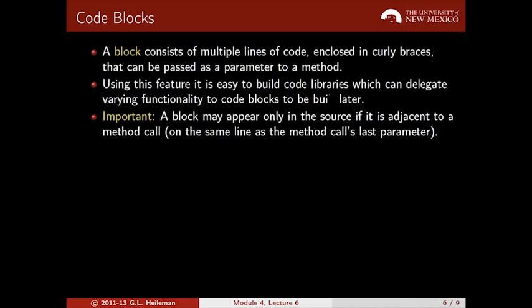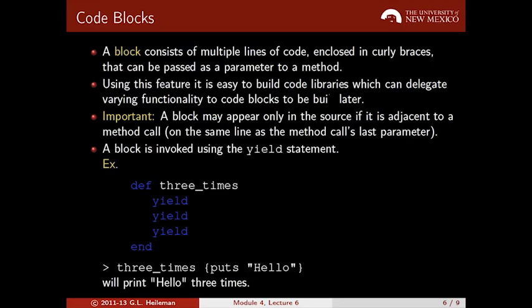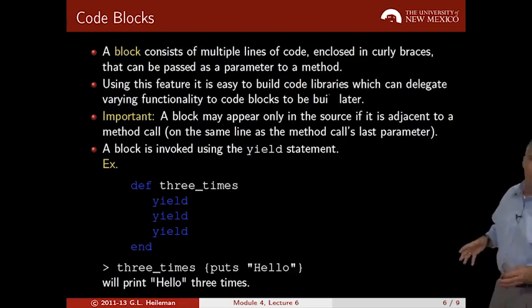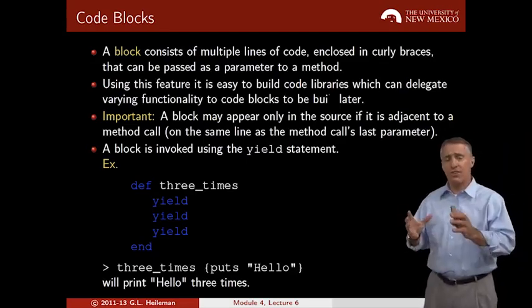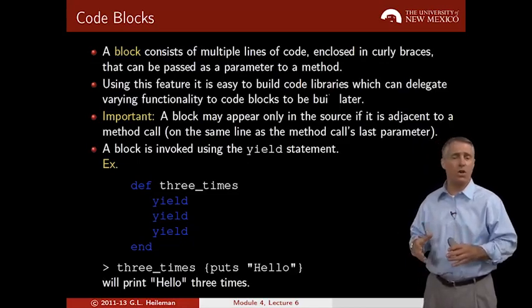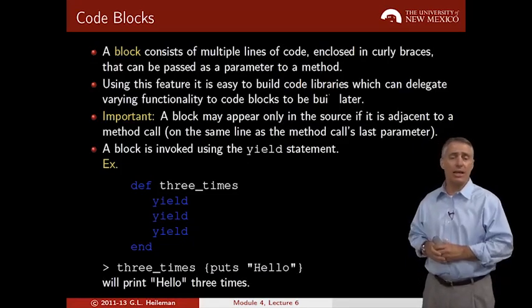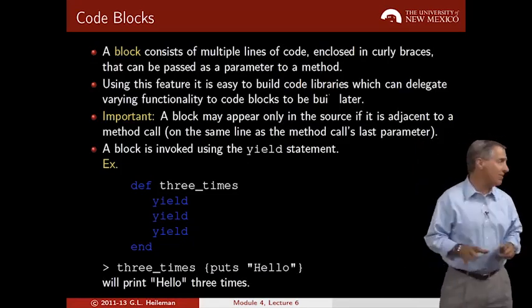An iterator is, in fact, an example of that. Here's the most important rule to understand about blocks. A block can appear only in the source code if it's adjacent to the method call and on the same line as the method call's last parameter.